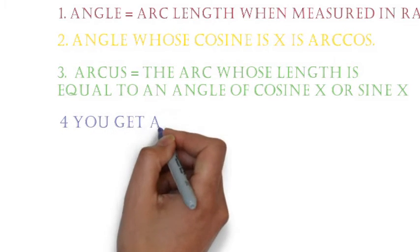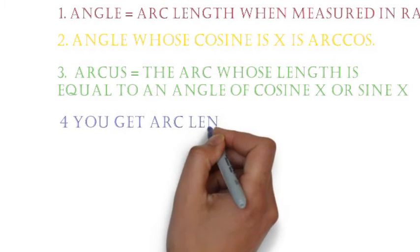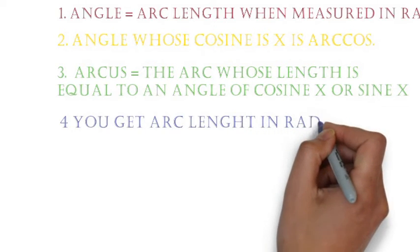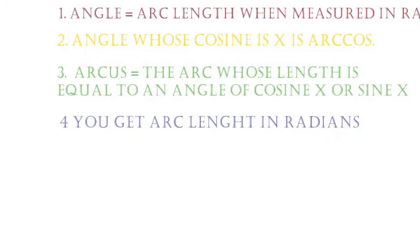We've just gone through that Arcus therefore simply means arc. Arcus cosine tells you the arc in radians whose cosine is x.